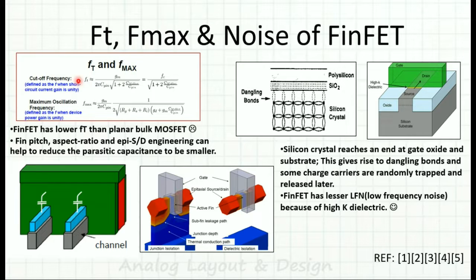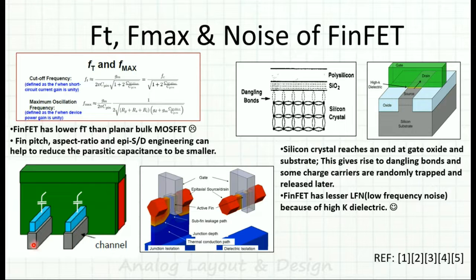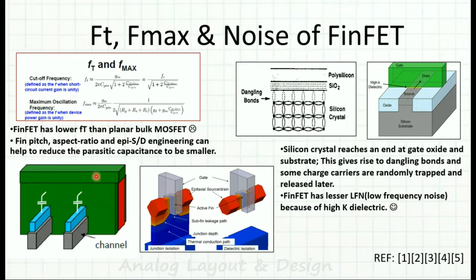FT is the transition or cutoff frequency and Fmax is the oscillation or self-resonant frequency. These must be high for FinFET to be used in high-speed designs. Unfortunately, FinFET has a lower FT than planar bulk MOSFET of similar size. This is because reducing the fin pitch increases parasitic capacitance, and there is overlap capacitance CGD and CGS between the gate and channel/drain/source — both of which lower FT and Fmax.